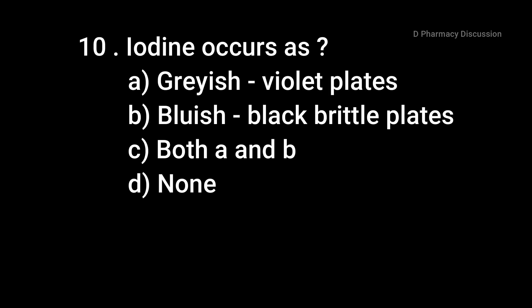Question 10: Iodine occurs as — option A: grayish violet plates, B: bluish black brittle plates, option C: both A and B, option D: none. Correct answer is option C, both A and B — iodine occurs as grayish violet plates and bluish black brittle plates.